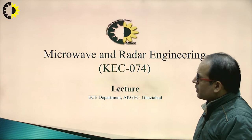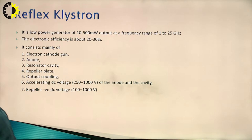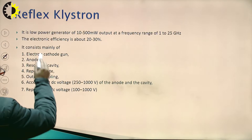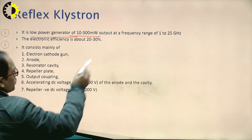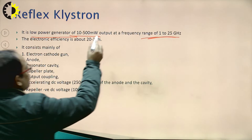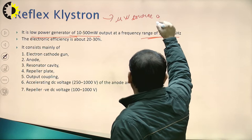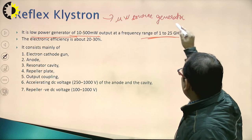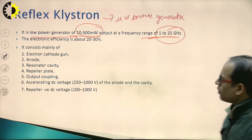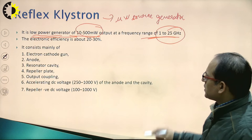In today's lecture, we will discuss the reflex klystron, which is also a microwave source generator. It ranges from 1 to 25 gigahertz and its output power is 10 to 500 milliwatt. It is a low power generator, generally used in laboratories and security radars.